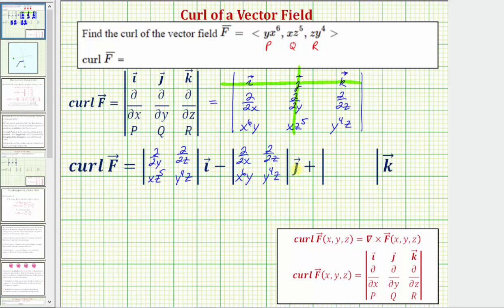Times the j vector. Plus, for the last two by two determinant, we eliminate the row and column of the k vector — so we eliminate row one and column three. So we have the partial with respect to x, partial with respect to y, x to the sixth y, and x z to the fifth, times the k vector. And now we'll evaluate these two by two determinants.